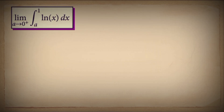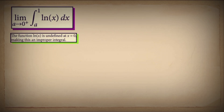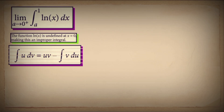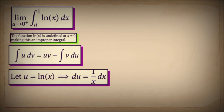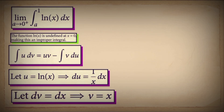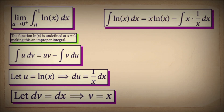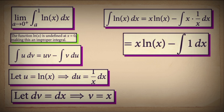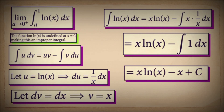This integral is improper because ln(x) blows up at x = 0. We must handle it with care. Let's compute it formally using integration by parts. We recall the formula: ∫u dv = uv − ∫v du. Let u = ln(x), so du = (1/x)dx. Let dv = dx, so v = x. Applying the formula, ∫ln(x) dx = x·ln(x) − ∫x·(1/x) dx = x·ln(x) − ∫1 dx = x·ln(x) − x + C.